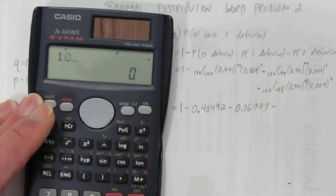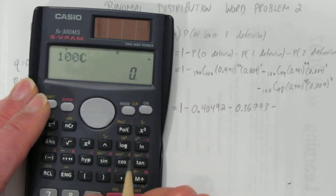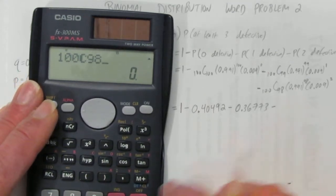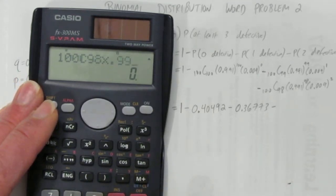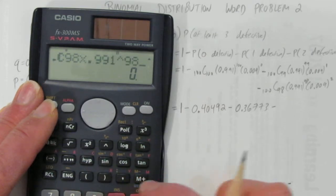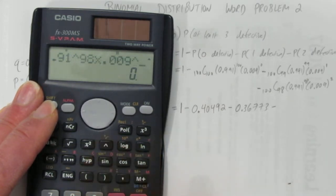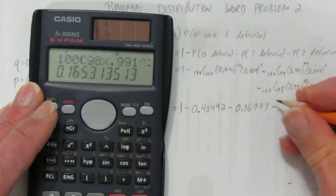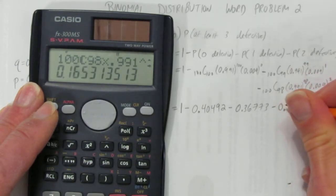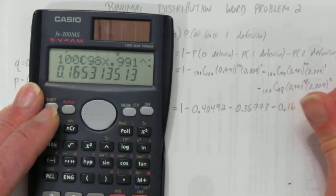100 choose 98. That I can't do in my head. I'm going to use a calculator. 100 choose 98 times 0.991 to the power of 98 times 0.009 to the power of 2. And you get approximately, let's round to 5 decimals again, 0.16531.